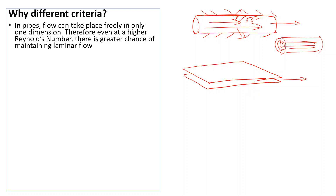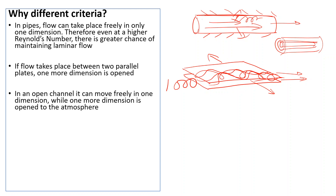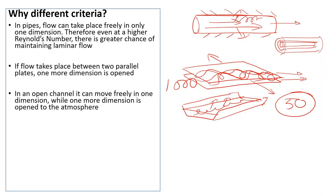For flow between two parallel plates, unlike pipe flow, one more dimension is open — the fluid can move in an additional direction, giving it more room. Because this restriction has been removed, even at lower velocities the flow tries to move around and become turbulent, so the Reynolds number limit drops to 1,000. For open channels, the flow can move freely in one dimension while another dimension is open to the atmosphere, giving even more freedom, so the limit is only 50.